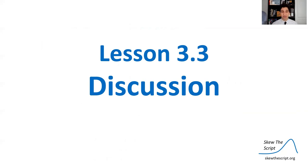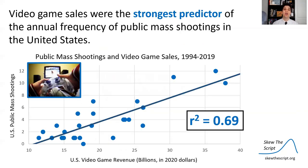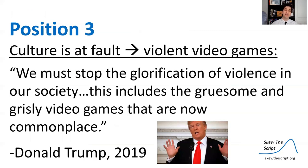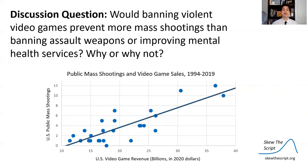Let's jump into a discussion about the specific data we've been talking about all lesson. We saw that video game sales were the strongest predictor — they had the highest R-squared value — of the annual frequency of mass shootings in the United States over the past 20 years or so. Almost 70% of the variation in yearly public mass shootings can be explained by a linear relationship with video game sales. So here's the discussion question: would banning violent video games prevent more mass shootings than banning assault weapons or improving mental health services? Why or why not?